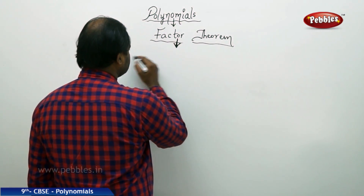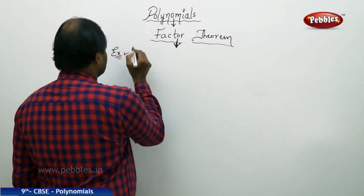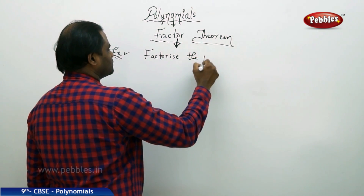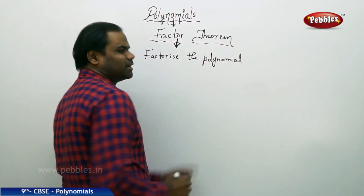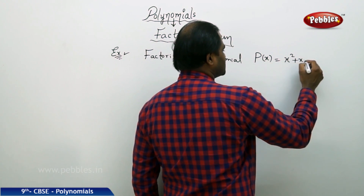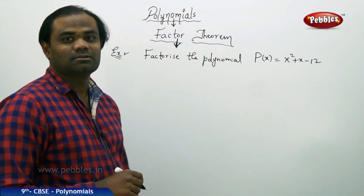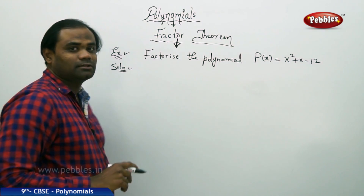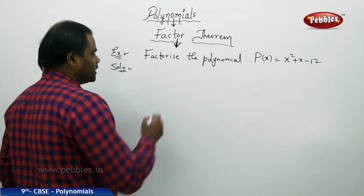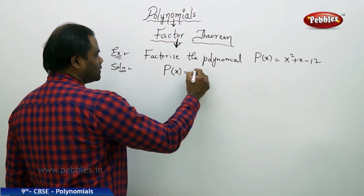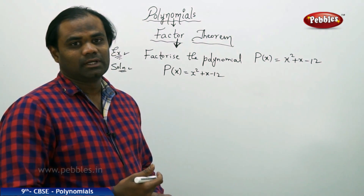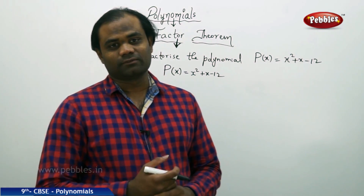The theorem says that if I have a polynomial P of x which I need to factorize. The question here says: factorize the polynomial P of x equals x squared plus x minus 2L. So let's see how we can factorize using the Factor Theorem. Directly through an example problem, let's try to understand the concept more strongly. My given polynomial is P of x equals x squared plus x minus 2L.